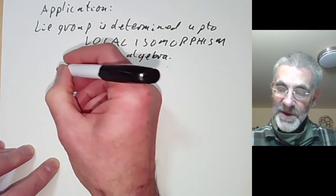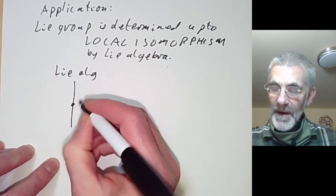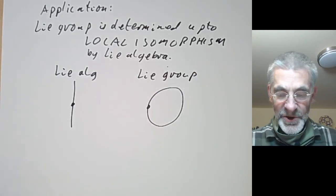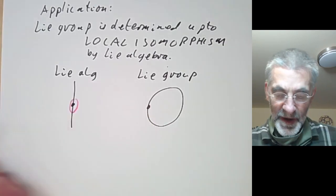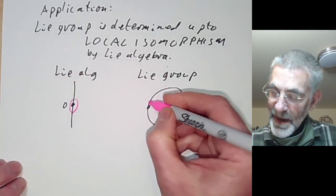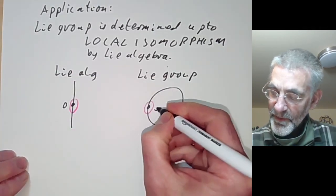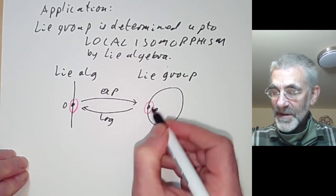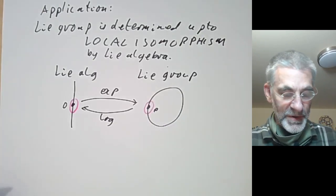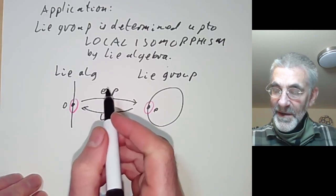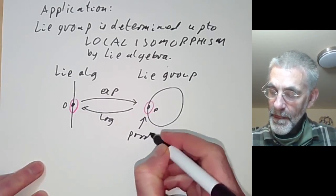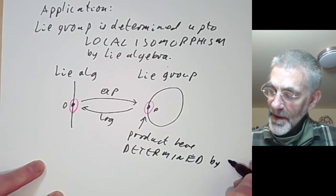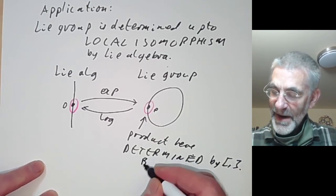This follows fairly easily. If we have a Lie algebra — a vector space — and the corresponding Lie group — a curved manifold — the exponential map is an isomorphism between some neighbourhood of zero in the Lie algebra and some neighbourhood of the identity E in the Lie group. We have an exponential map and its inverse, the logarithm map, which converges at least in some neighbourhood. The Baker-Campbell-Hausdorff formula means the product here is determined by the Lie bracket.